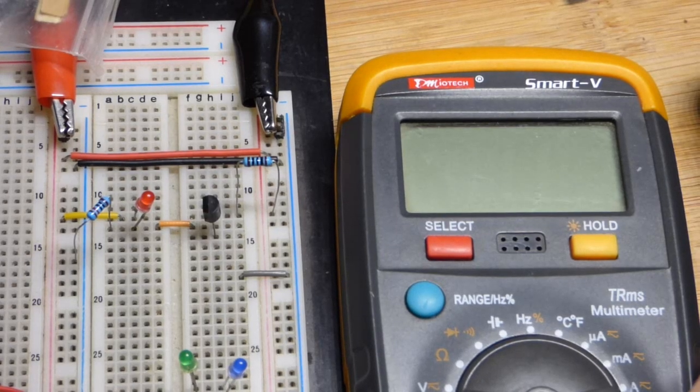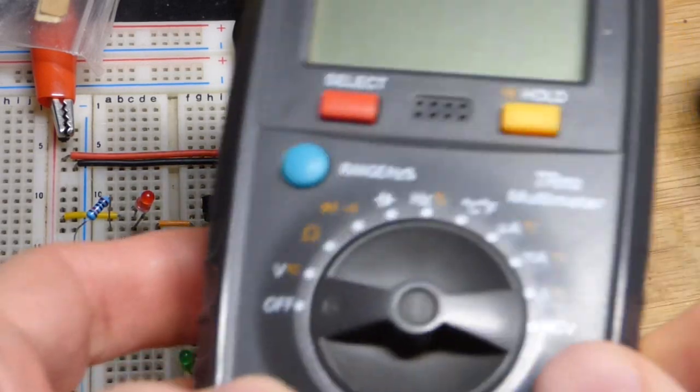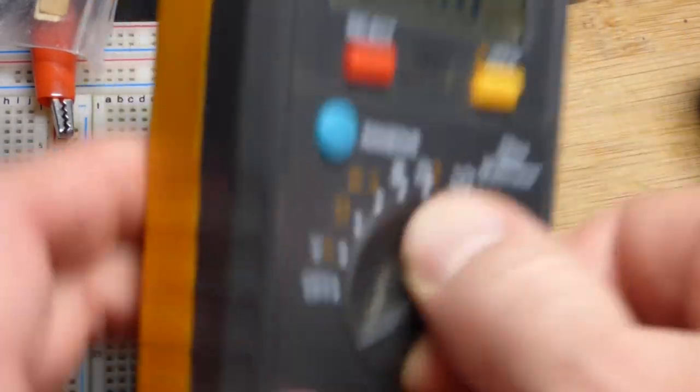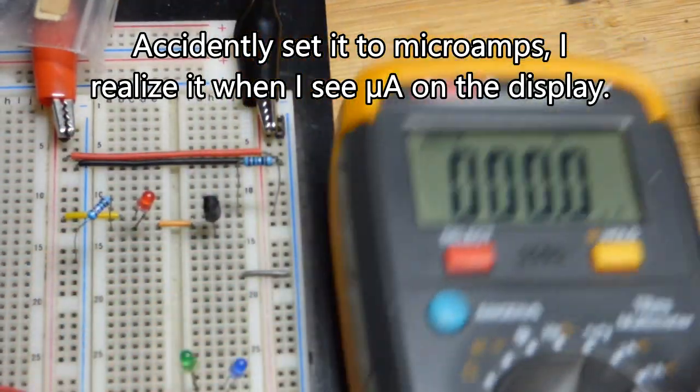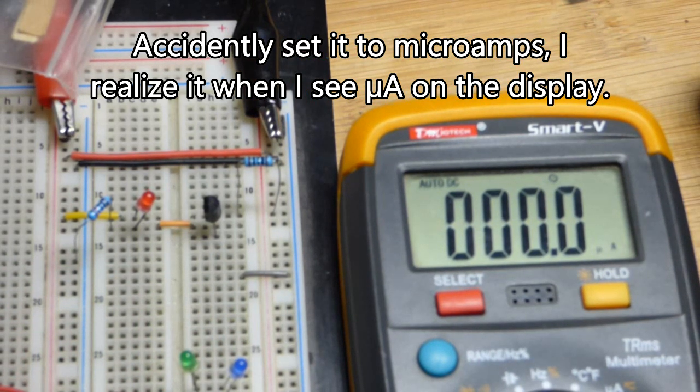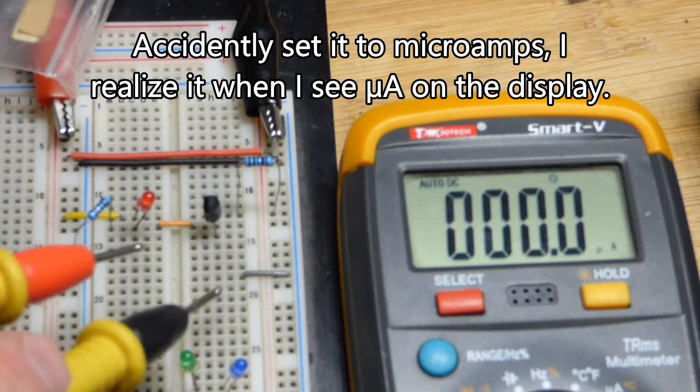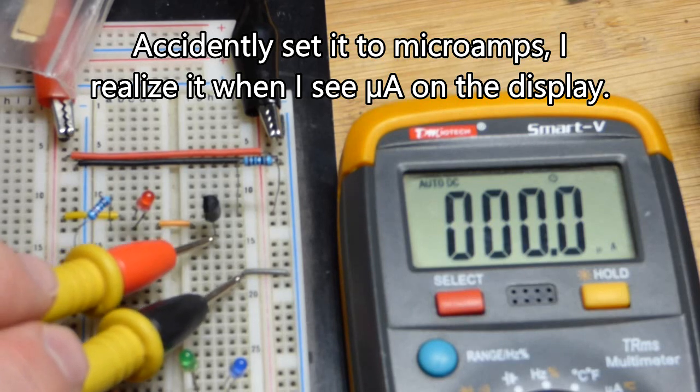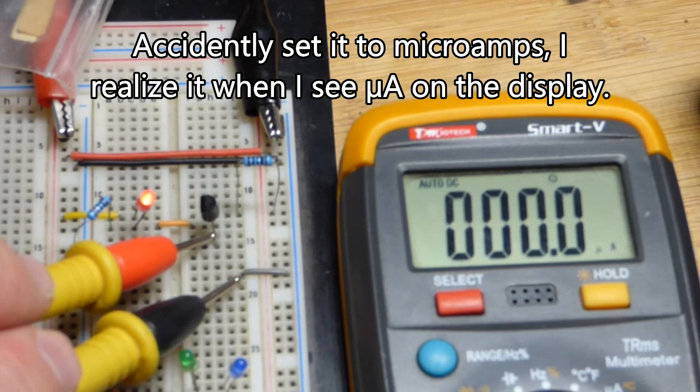So for those of you still finding this interesting, we will take multimeter measurements. So first, we will go to milliamps right there, and we got 5 volts at the supply. And when I get this going, you'll see, then current will start going through the red LED.